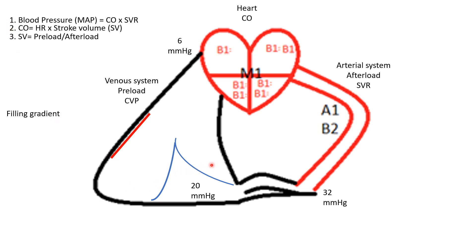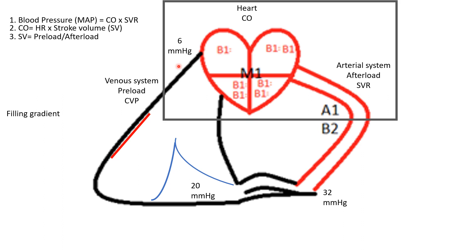In the venous system, fluid moves via a pressure gradient where generally post-capillary we're about 20 millimeters of mercury, and at the right heart we're about 6 millimeters of mercury. Normally, our filling gradient when we're not inhaling is 20 minus 6, or 14 millimeters of mercury — the amount of pressure that we can push with to drive fluid up to the right heart.